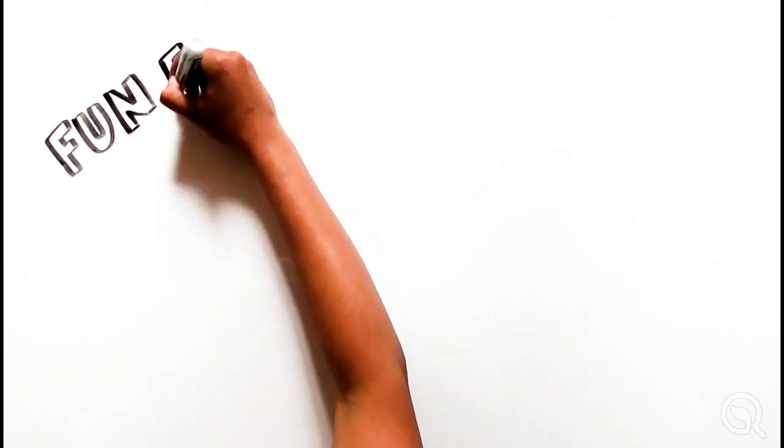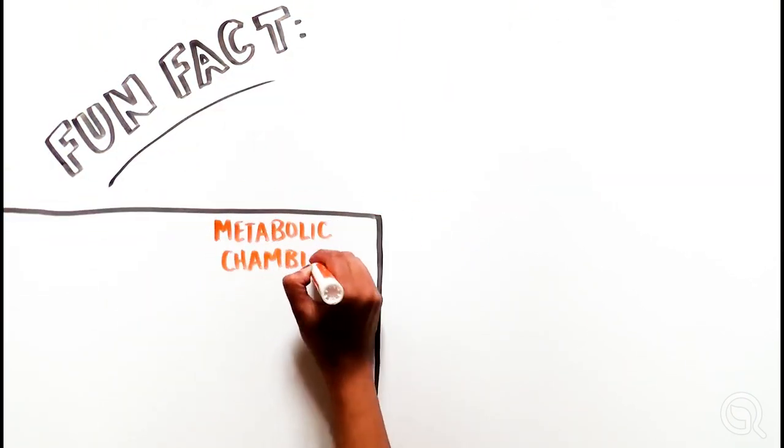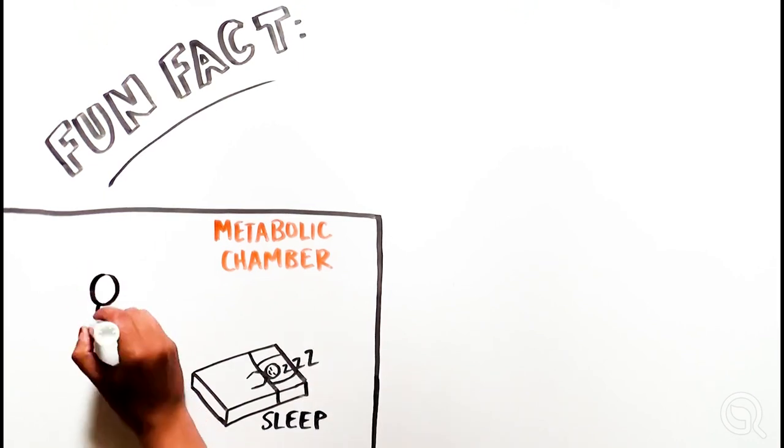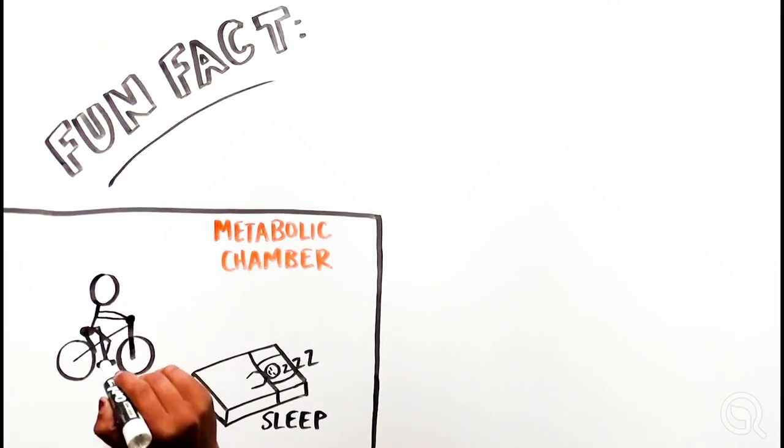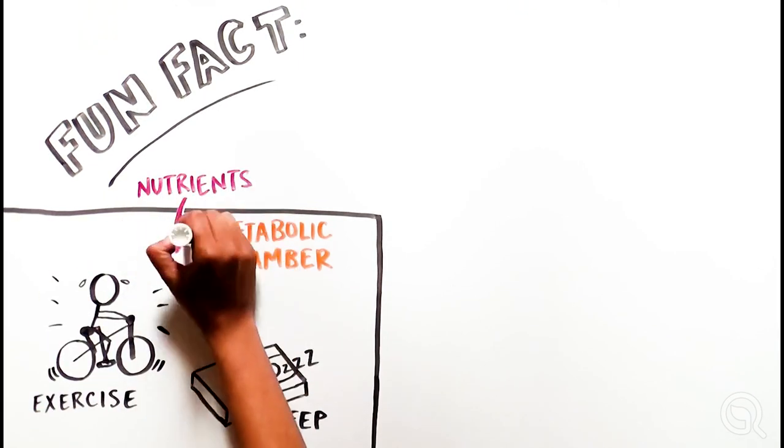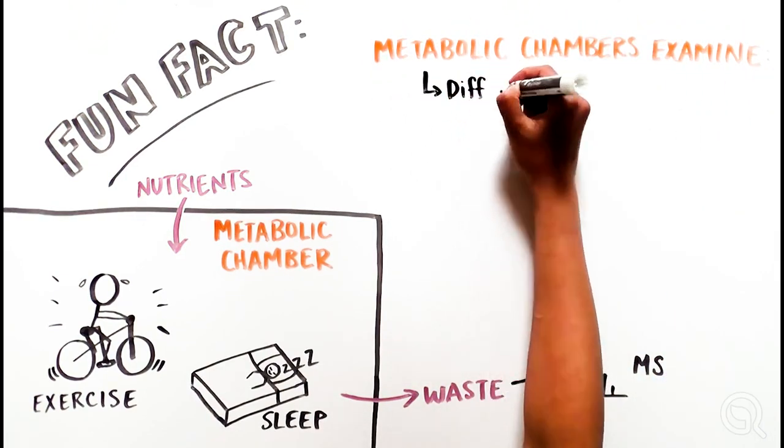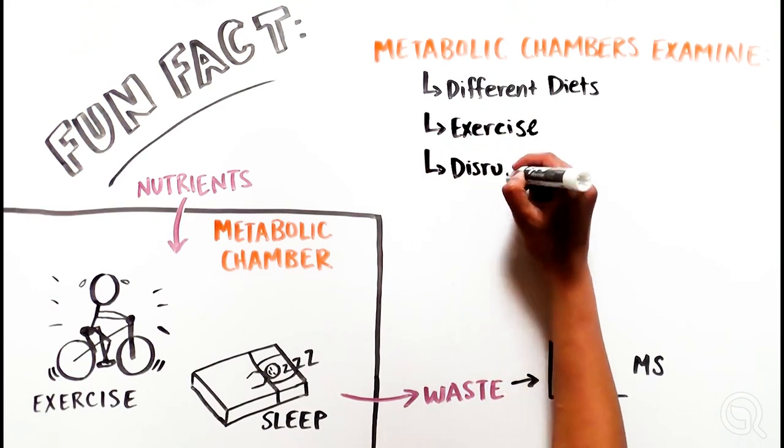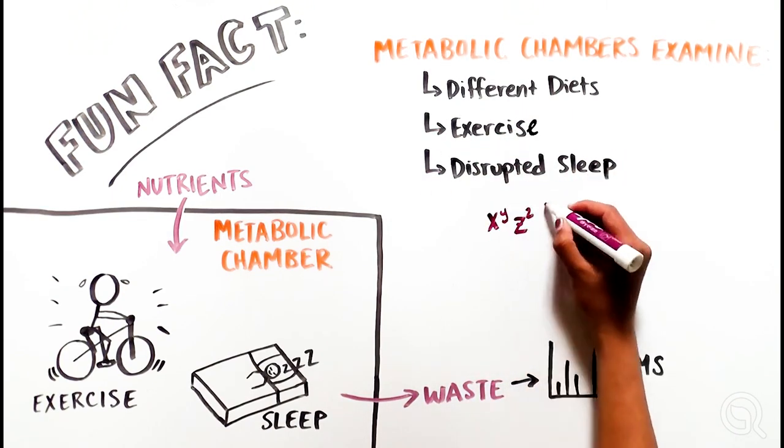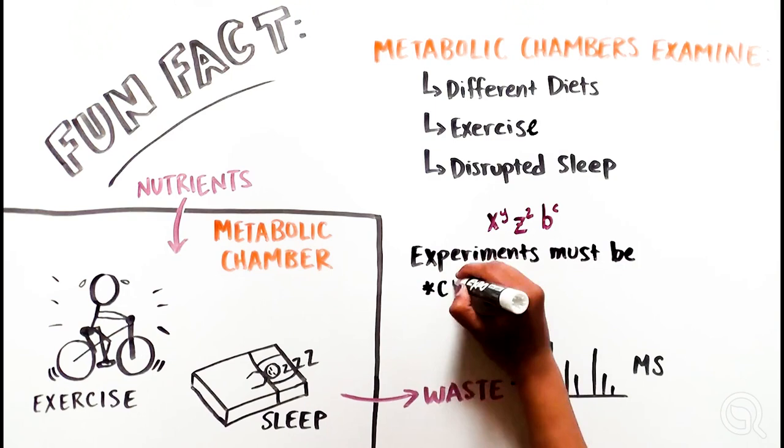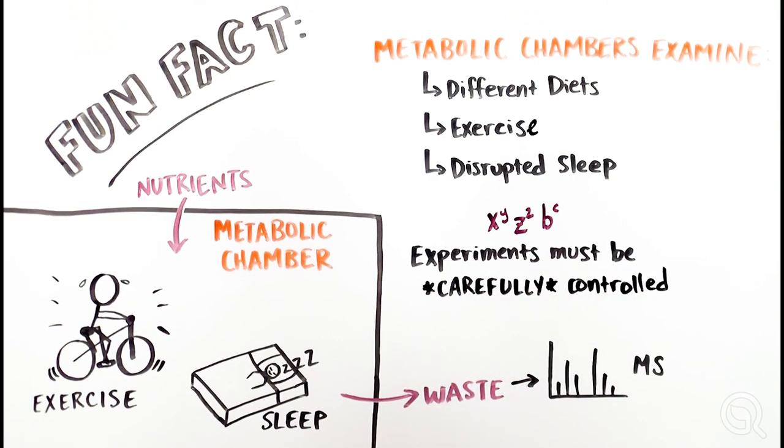Fun fact, there are laboratories with metabolic chambers in which volunteers live for short periods of time. Everything that they eat and even excrete can be measured, allowing us to examine the effect of different diets, exercise, or disrupted sleep on how fuels are broken down. It's important to carefully control metabolic experiments, since what volunteers had for breakfast might influence the results.